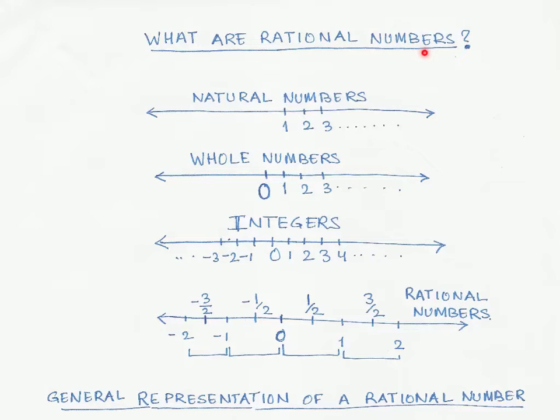Then the next type of numbers we learned are whole numbers, and you get whole numbers just by adding 0 to the natural numbers. So whole numbers start from 0, 1, 2, 3, and so on up to infinity.